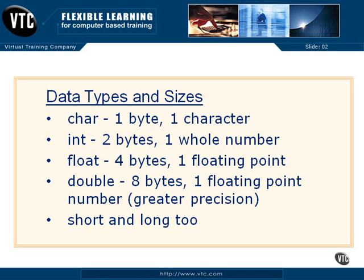A double takes eight bytes of storage, but it still only holds one floating point number — that number just has much greater precision. It can be much more precise. That's usually used for higher math, graphics, computational things like that.